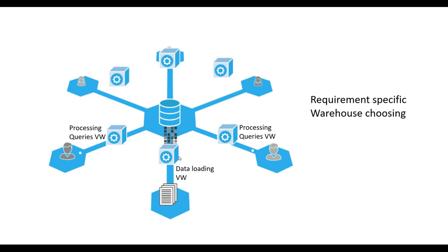Requirement-specific Virtual Warehouse choosing — for data loading, extra small is enough, so you choose extra small. For a user group operating on large datasets, I'm choosing L size. There is another group of users operating with only small tables, so I will create an S size Virtual Warehouse. Based on our requirement, we can choose our Virtual Warehouses.